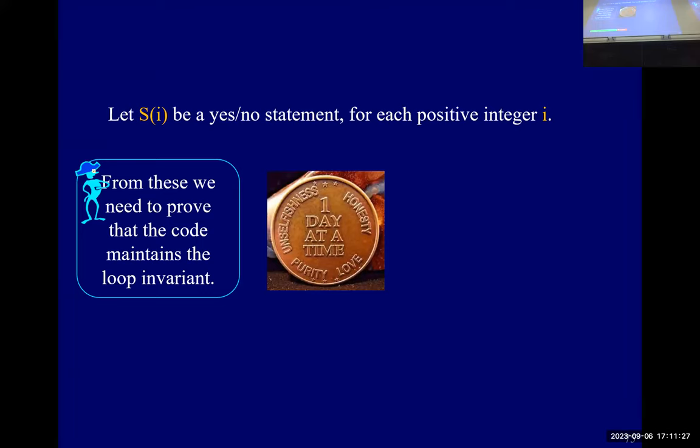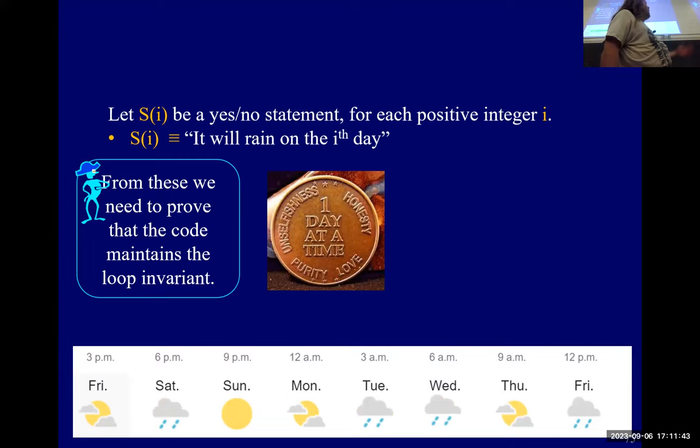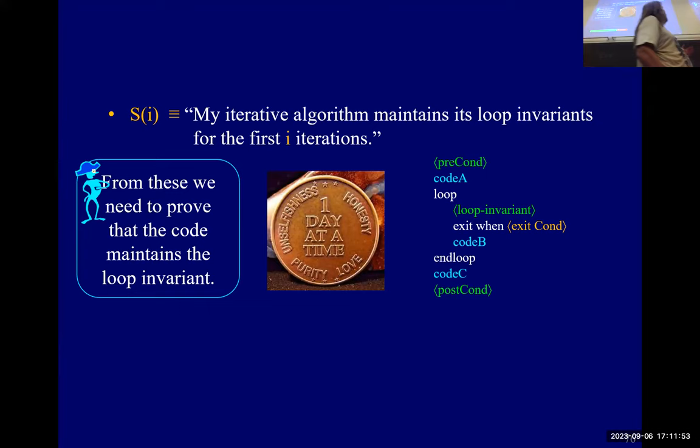And we're supposed to prove that S of I is true for every instance of I. And so S of I could be, it rains on the I day, right? There's certain days, and here some S's are true and some S's are false. And our goal, our S is going to be that the loop, the algorithm maintains the loop invariant. You can either have it be at the I iteration or the first I iterations, doesn't matter which, right?